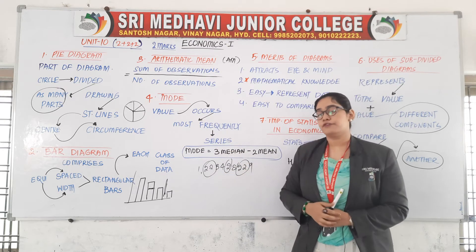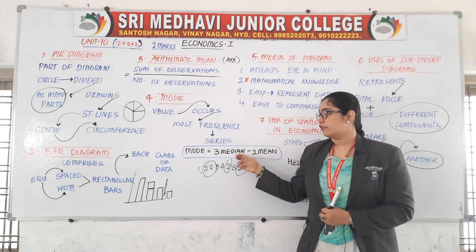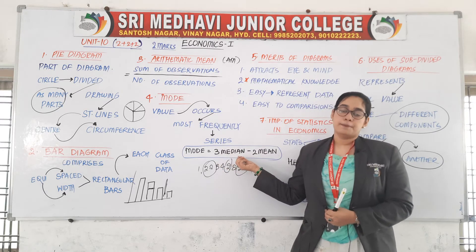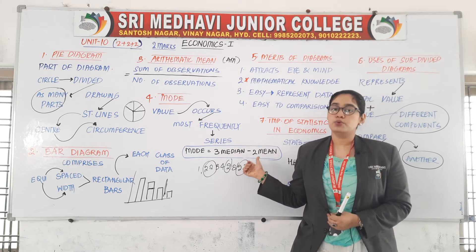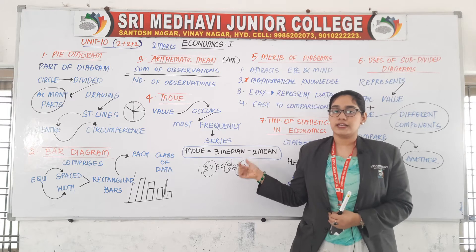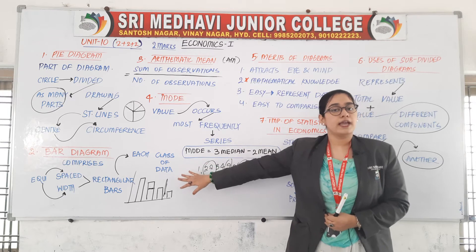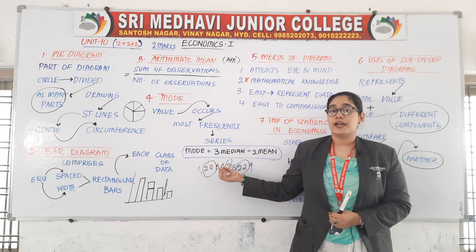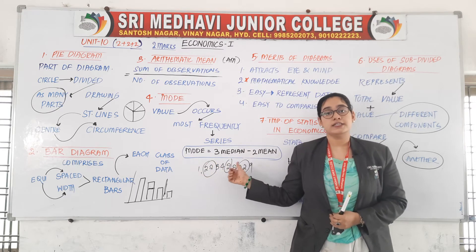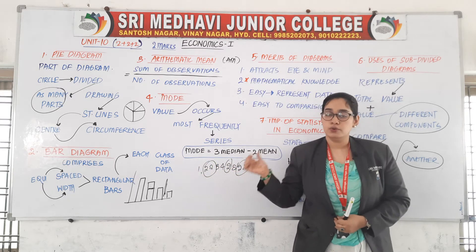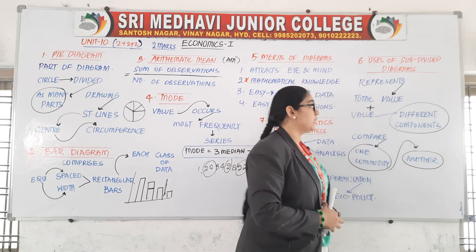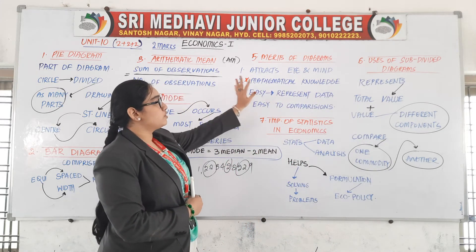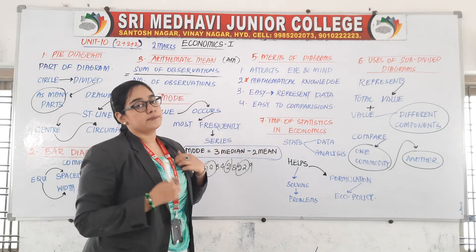There is also a formula for calculating mode, that is: 3 median minus 2 mean. Mode can be calculated through this formula.